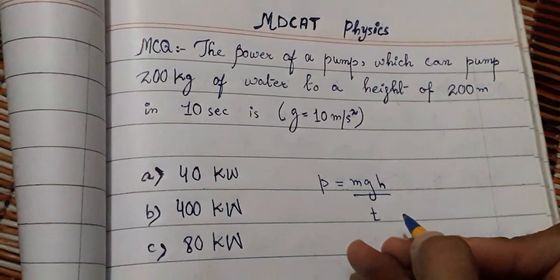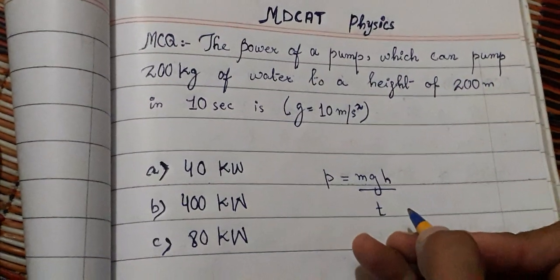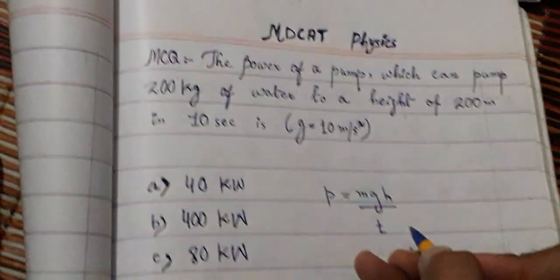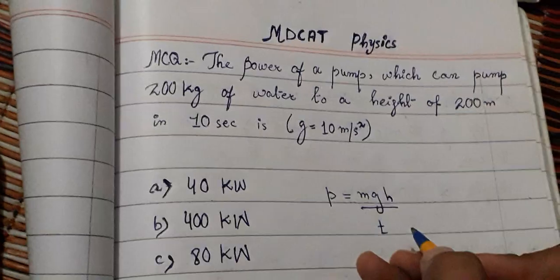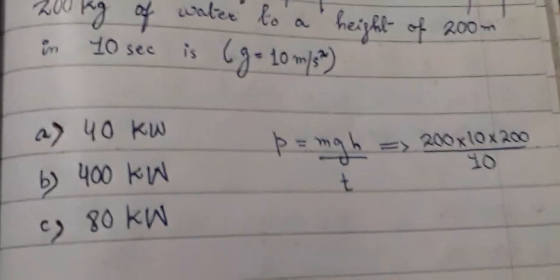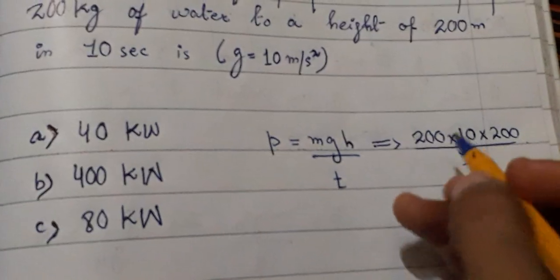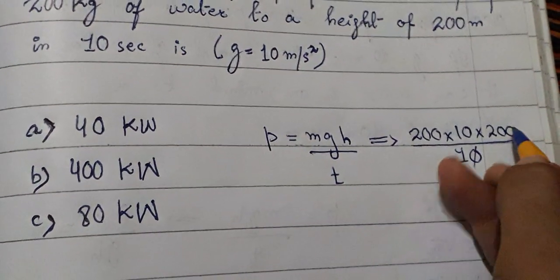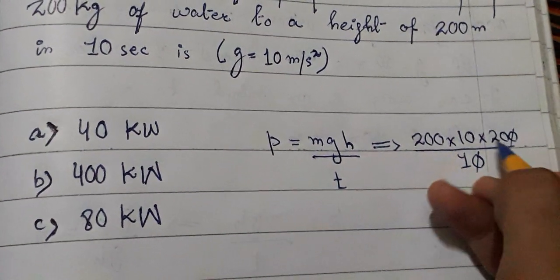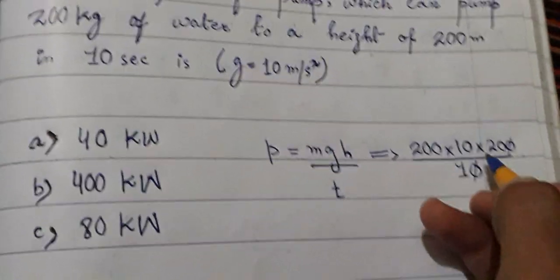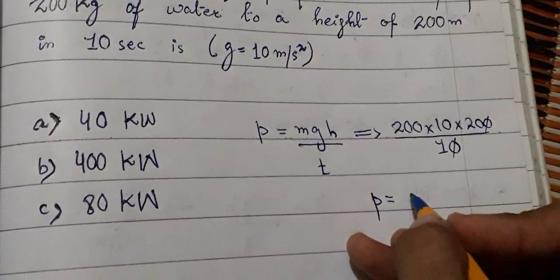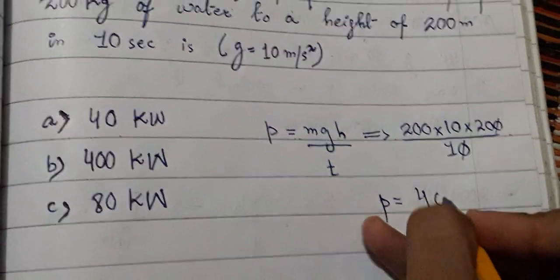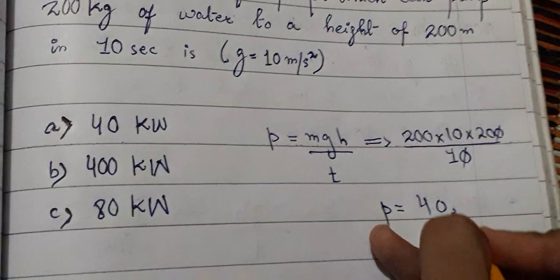We use the formula: power equals mgh divided by t. Now we put in the values, canceling zeros where applicable, and multiplying them out. Our answer comes out to be 40,000.